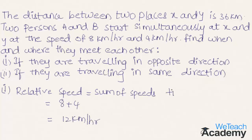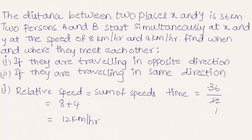The time taken by A and B to meet is total distance, 36 kilometers, divided by the relative speed of 12 kilometers per hour. Simplifying, 36 divided by 12 gives 3 hours.